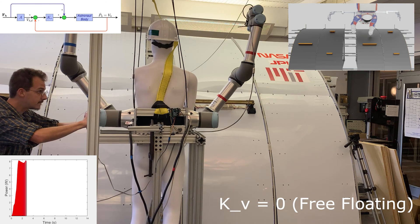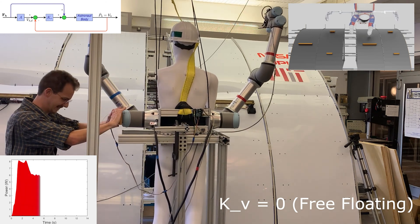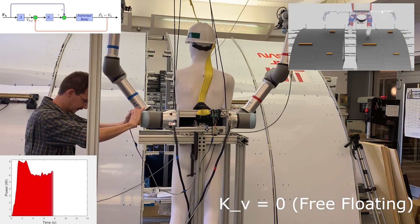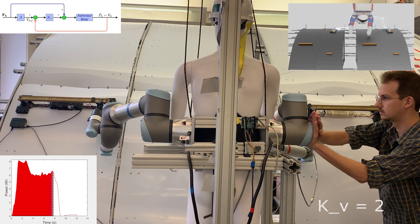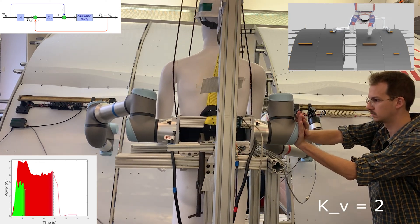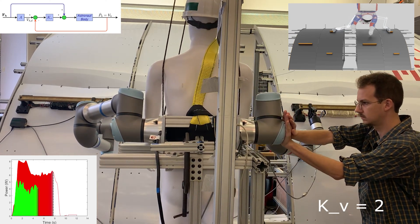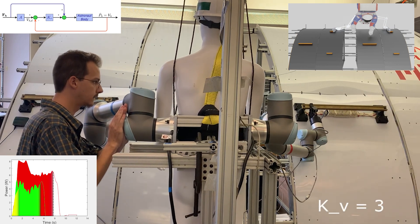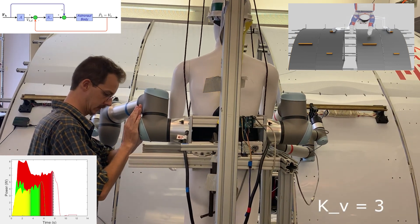The second test assesses the superlimbs' ability to attenuate the effective inertial mass of the astronaut's body. By pushing the prototype along a single axis, we analyze the amount of power and work required by an astronaut to propel themselves in a microgravity environment both with and without superlimbs.